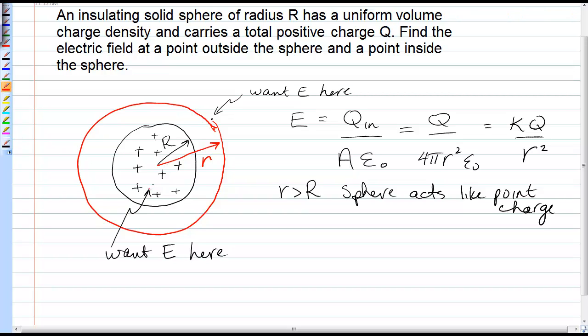So, I'll draw a Gaussian surface inside here, and the amount of charge inside our Gaussian surface is now what goes into the formula for the electric field. So, this will be q in, and we can see that it is not the entire charge of that sphere, but something less.